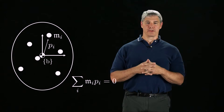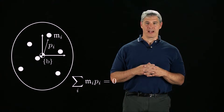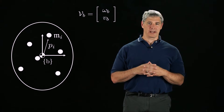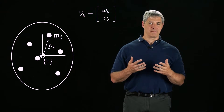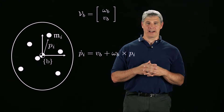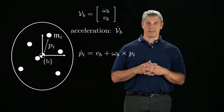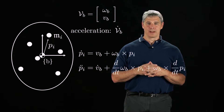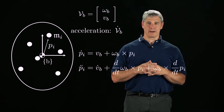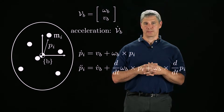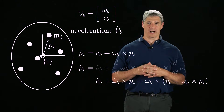We define the twist of the rigid body, expressed in the b-frame, as vb, consisting of an angular velocity omega-b and a linear velocity vb. Then the linear velocity of mass i is pi-dot equals vb plus omega-b cross pi. We define the acceleration of the rigid body to be vb-dot, and using this we can take the derivative of pi-dot to get pi-double-dot. Notice that the last term is omega-b cross the time derivative of pi, so we can substitute in the expression above to get the equation for pi-double-dot.